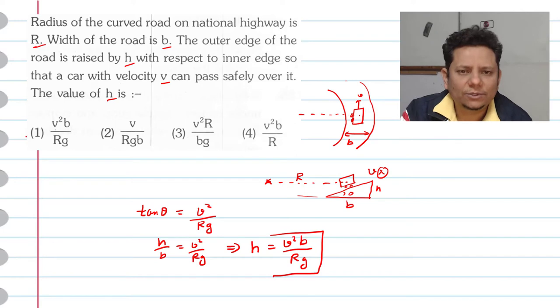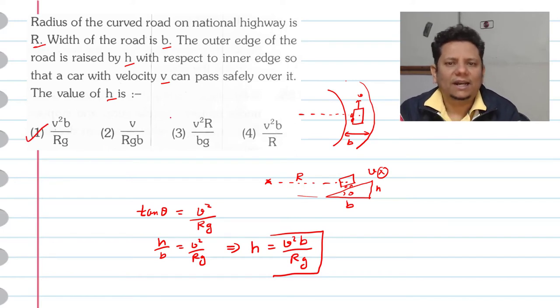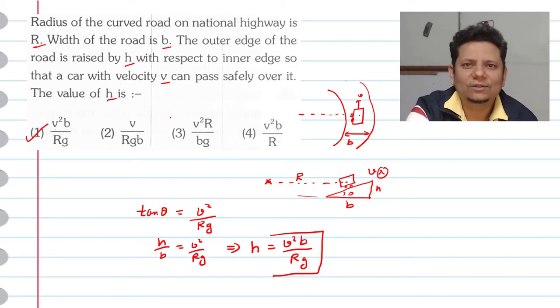Based on this, we can say option number one, V square B by Rg would be the right answer. I hope this solution you have understood.